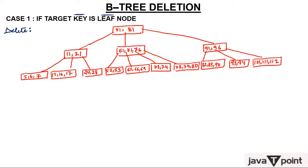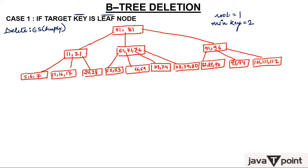Let's start — delete 65. If you want to delete 65, you search for it: 65 is between 51 and 80, so you come to that node. Now check the minimum number of keys, which equals 2. This node is having more than 2 keys, so simply delete 65. No issue — simply delete it.